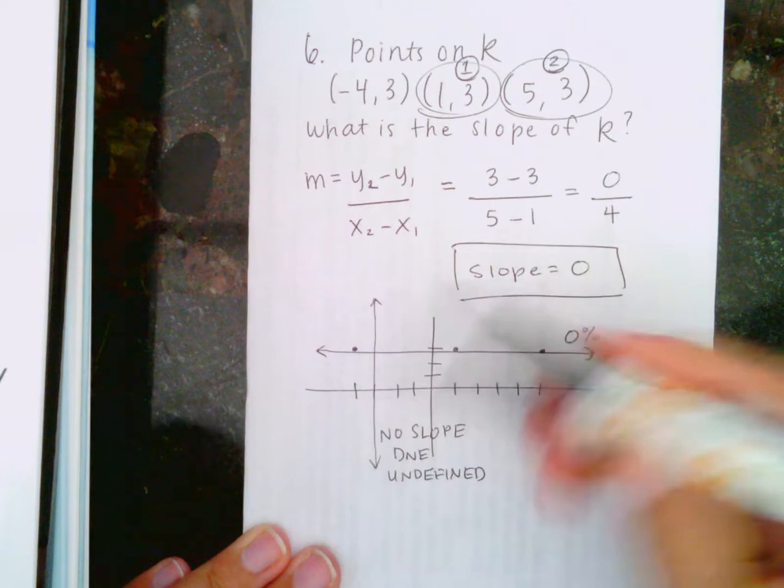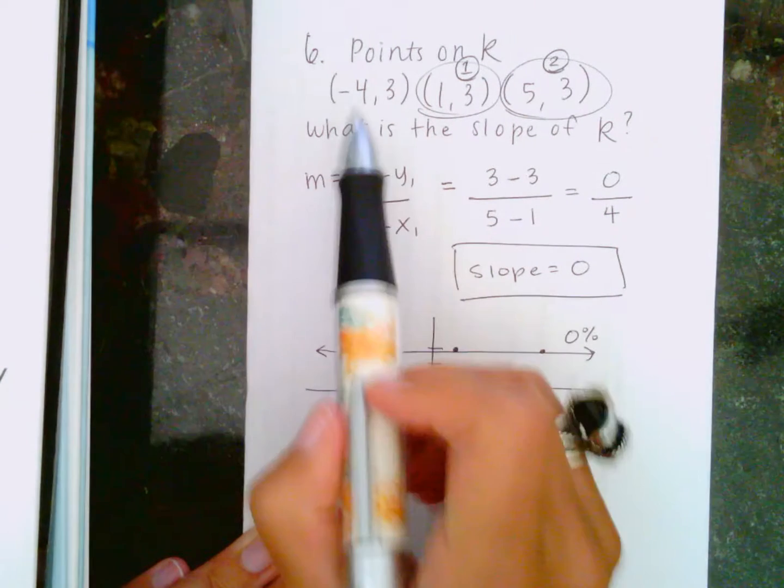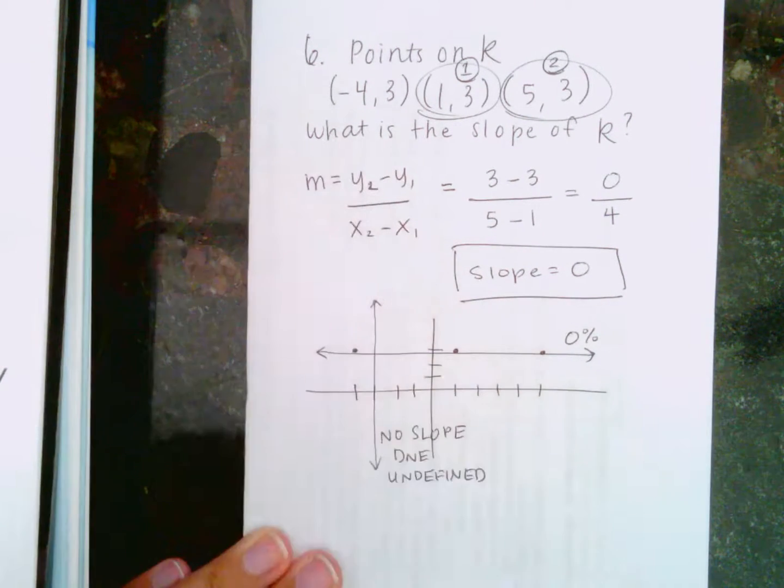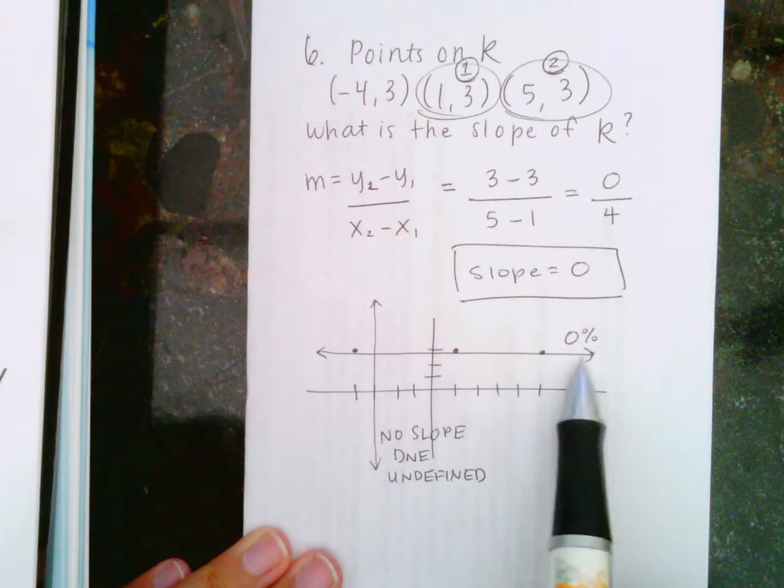But in this example, on number 6 that I was given to work, this slope is 0.